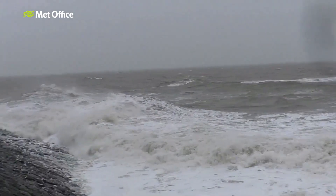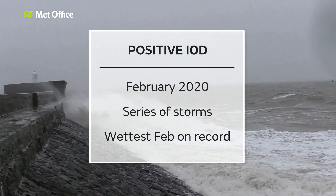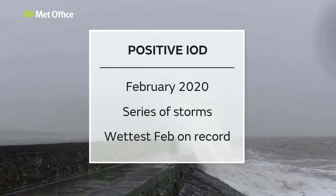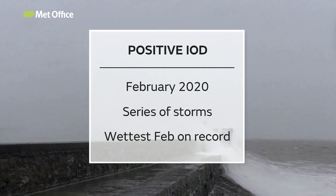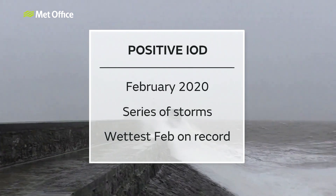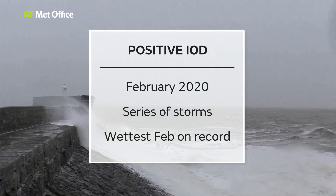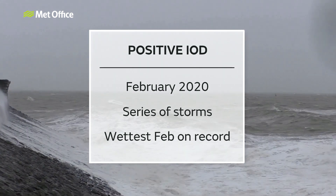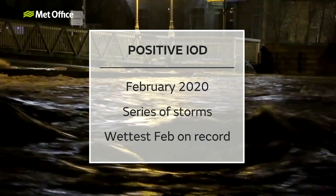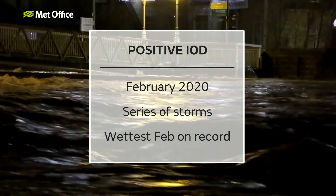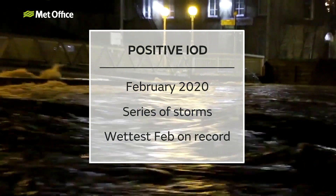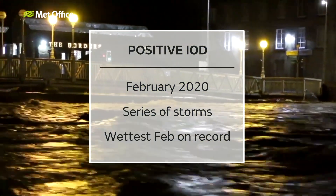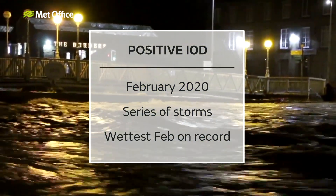Although other factors were undoubtedly also at play, this is what was observed in early 2020, with February seeing a number of intense low-pressure systems crossing the country, resulting in the wettest February ever recorded and the fifth wettest month ever recorded across the UK.